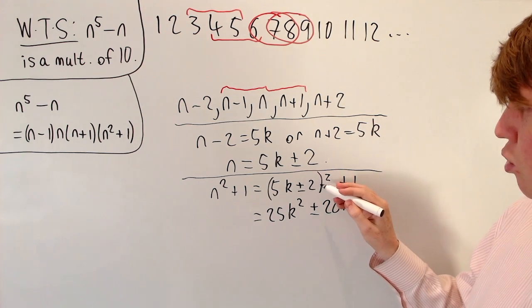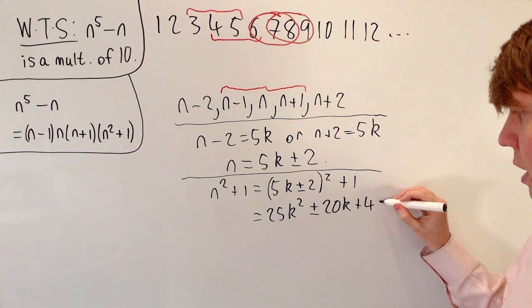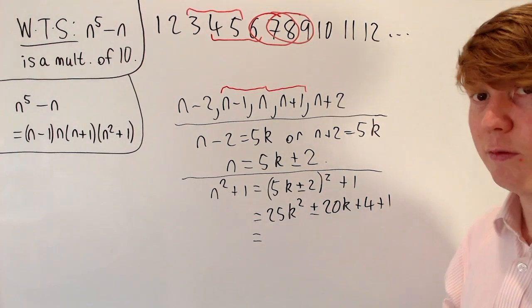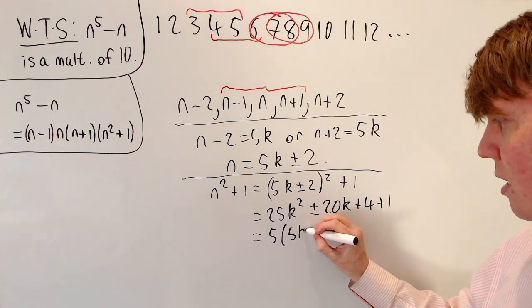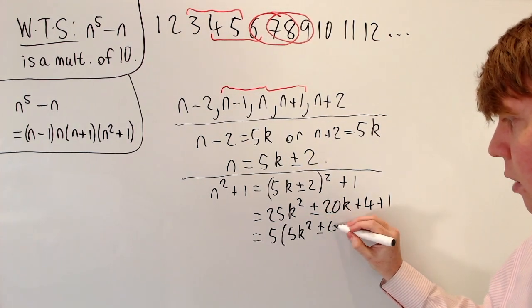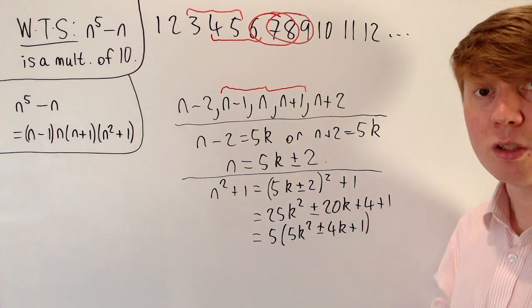Then the plus 2 or the negative 2, when we square this, we just get a positive 4 in either case. So plus 4 plus 1, which gives us a plus 5. So now we can take out a factor of 5, and you see that this is indeed a multiple of 5, as we were hoping. So we get 5 into 5k squared plus or minus 4k plus 1.